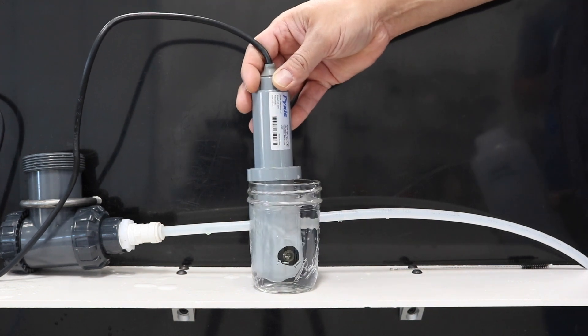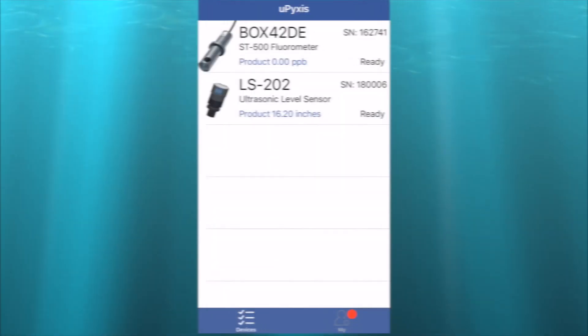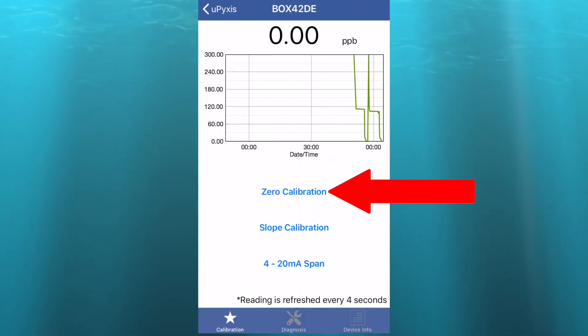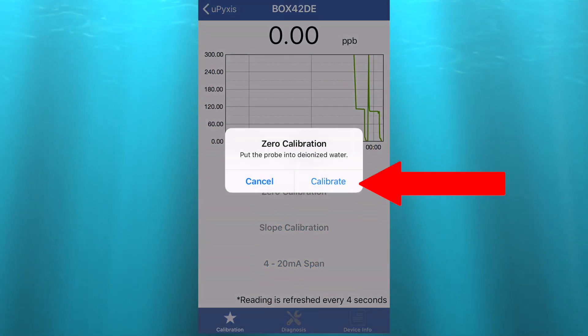To begin the calibrating process, place the probe into DI water and select the probe on your uPixis app. Then select zero calibration and calibrate.